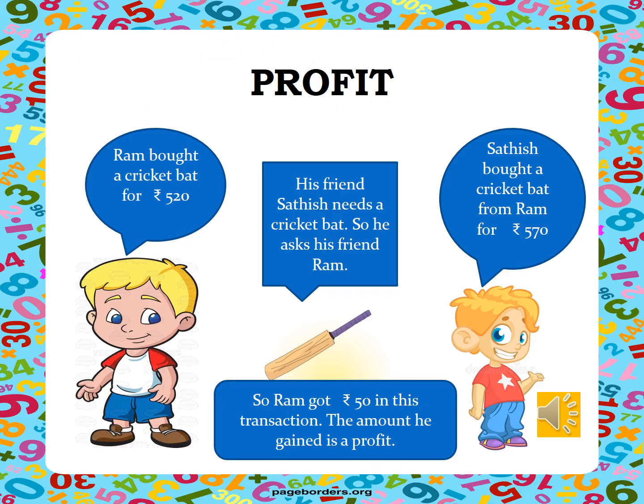Here comes a situation where we learn about profit. There were two friends, Ram and Satish. Satish was in need of a cricket bat, so he asked his friend Ram. Ram bought a cricket bat for Rs. 520 and Satish bought the cricket bat from Ram for Rs. 570. So Ram got Rs. 50 in his transaction. The amount he gained is a profit.